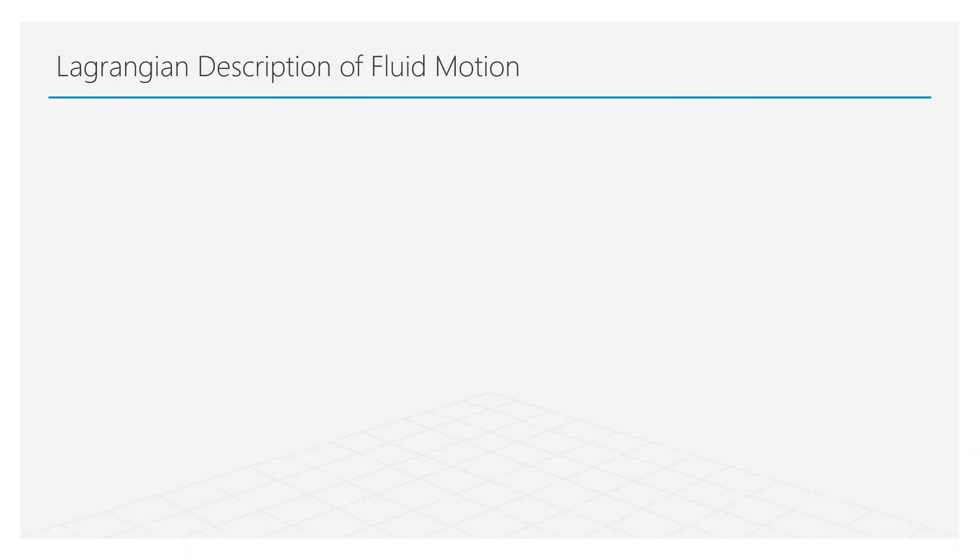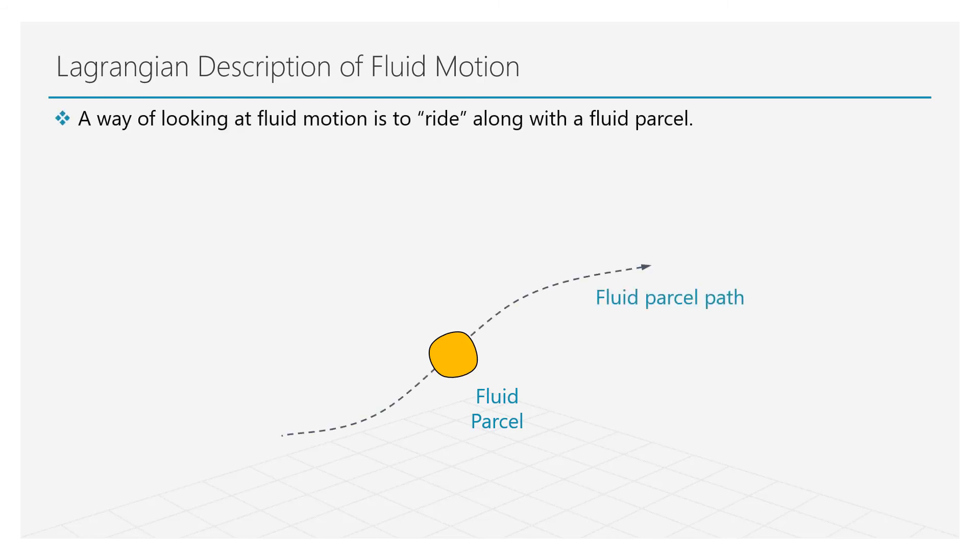The first one is the Lagrangian description of the flow field. In this description, the fluid is assumed to be a collection of large number of fluid parcels. The idea of Lagrangian description is to follow these individual fluid parcels through the flow field. In fact, the motion of these fluid parcels is described as a function of time. This helps the analyst estimate the position, velocity, and acceleration of each fluid parcel in time.